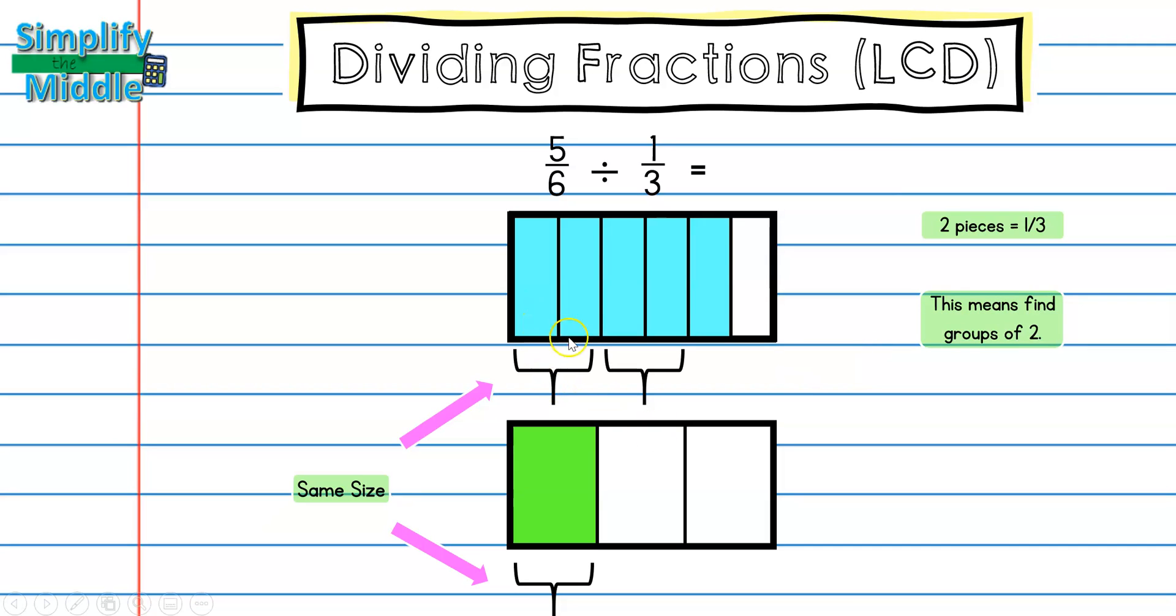So I have one group of two, two groups of two which are two wholes, and then I have one remainder. And remember that I'm looking for groups of two, so that's going to give me one remainder goes on my numerator and the groups of two goes below in my denominator. So how many groups of one-third are in five-sixths? Two and a half.